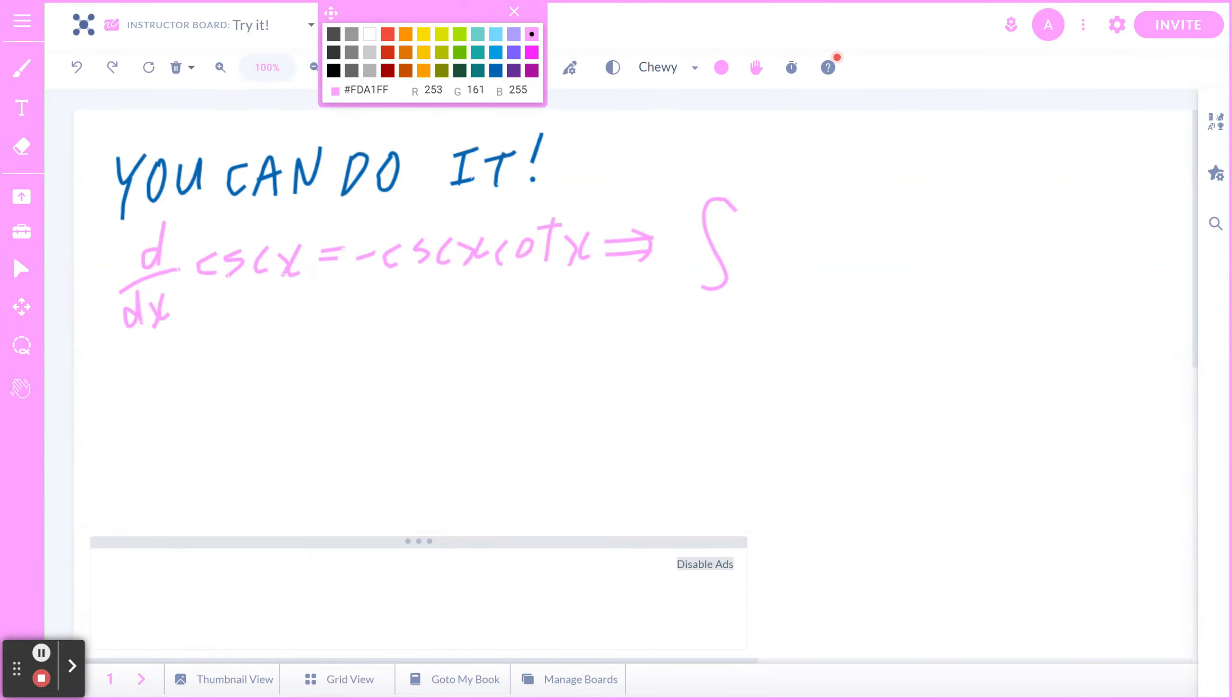If you want to find the anti-derivative or the integration of cosec x times cotangent x with respect to x, this will give exactly negative cosec x plus a constant C. Now likewise, if you think about d/dx of sec x...